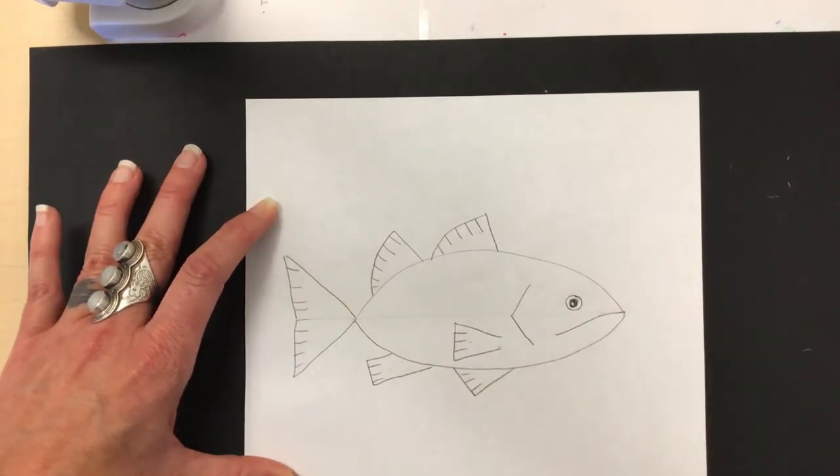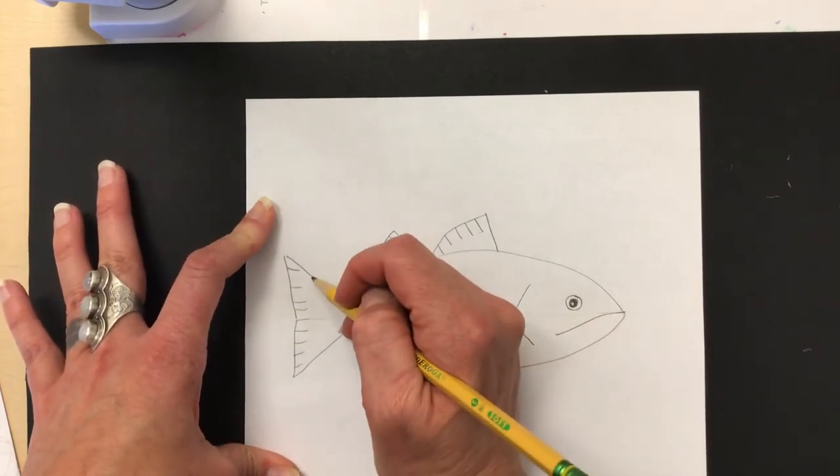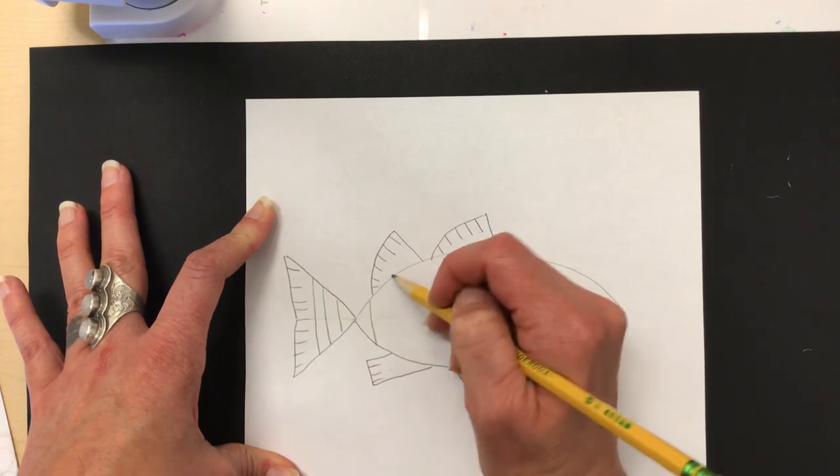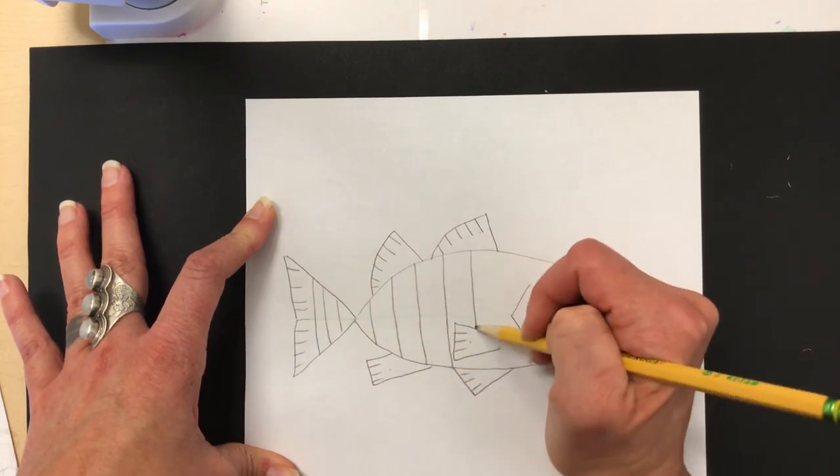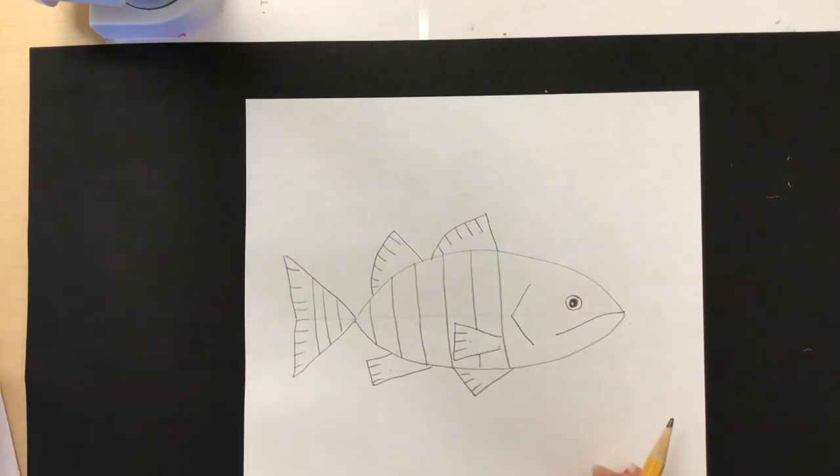Now, this is also where you can add any details to your fish that you'd like. For example, if I wanted to make my fish have stripes, I could come through and add some stripes on the body. If you want to leave it just the way it was, you can do that too. So, there's my fish so far.